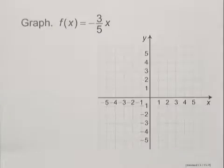Graph f of x equals negative 3 fifths x. We want to find some function values and plot the corresponding points and then draw the curve.